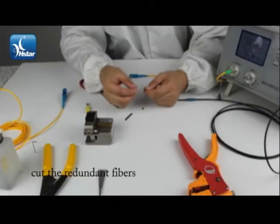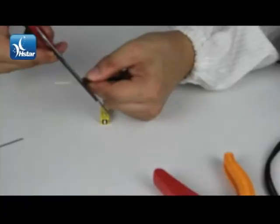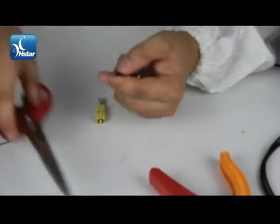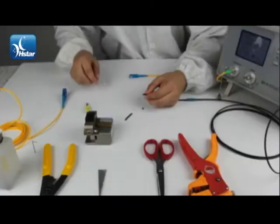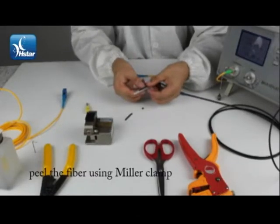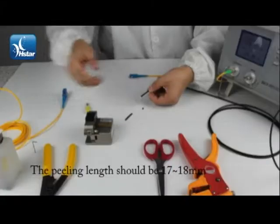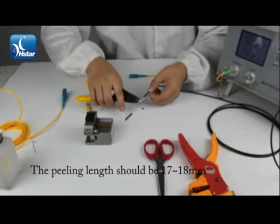Cut the redundant fibers. Set the cable onto the fixture. Peel the fiber using miller clamp. The peeling length should be 17 to 18 mm.